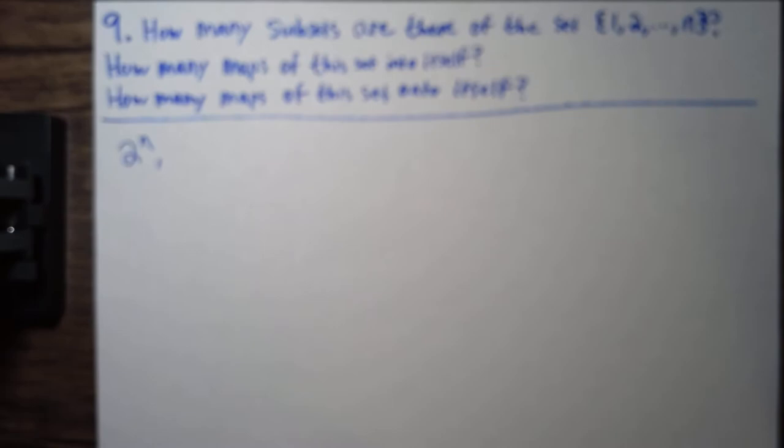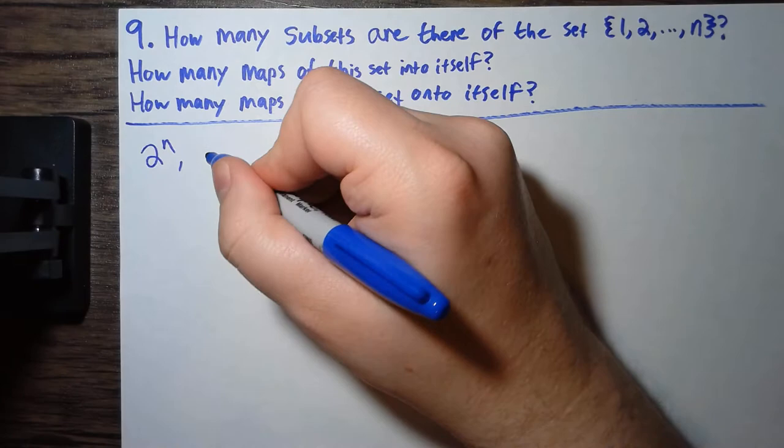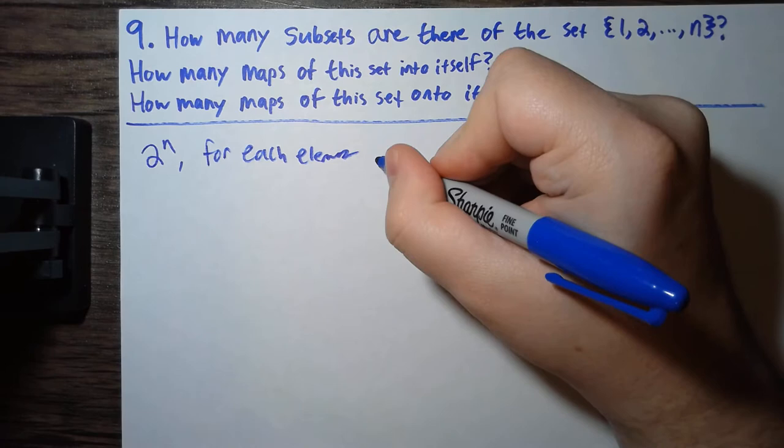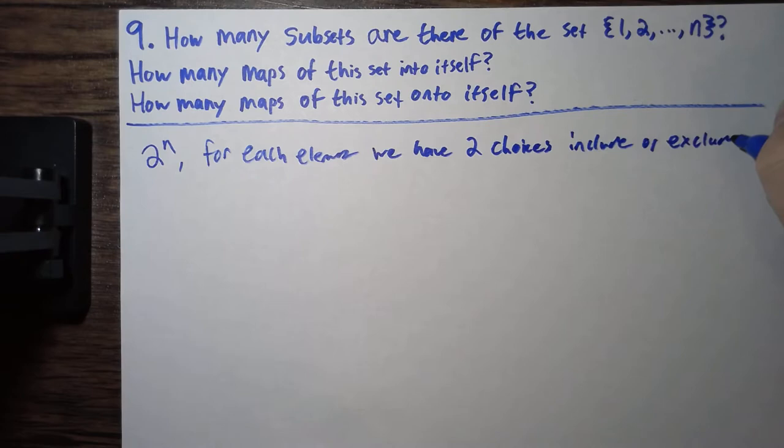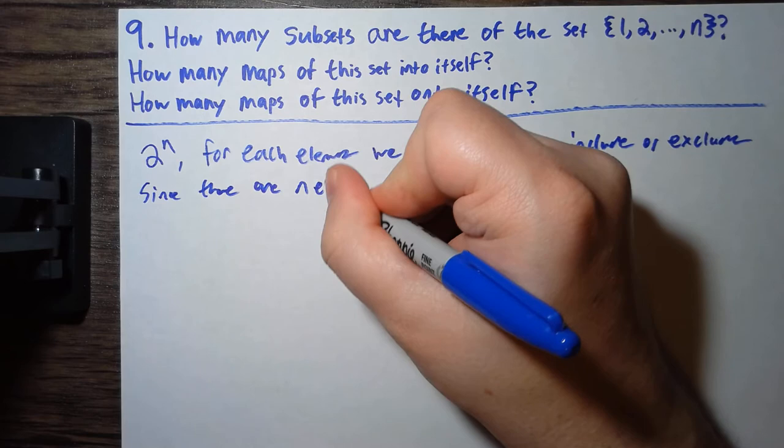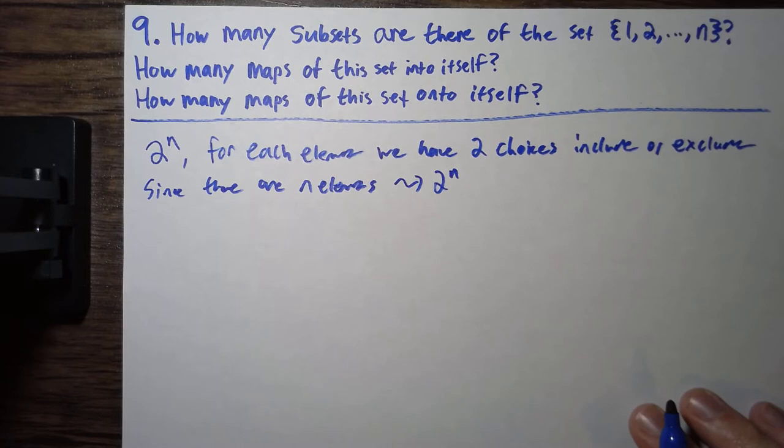Let me focus the camera. And the entire idea here is, for each element, we have two choices. We include it, or exclude it. And since there are n elements, this gives us 2 to the n.